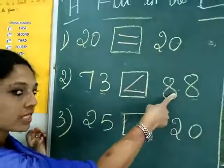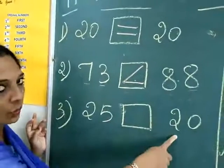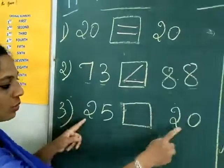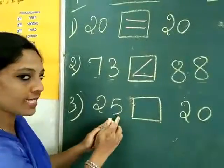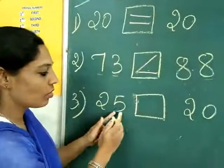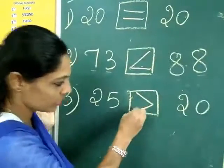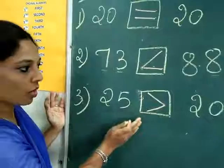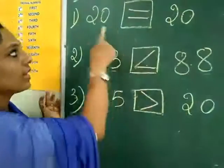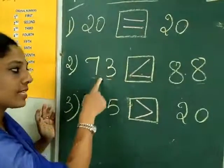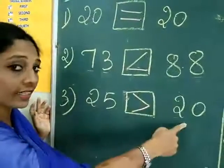The big mouth is open towards the bigger number, eighty-eight, and the sharp point is pointing towards the smaller number, seventy-three. Third example: twenty-five and twenty. Both have the same tens digit, so compare the ones place — five is bigger than zero. So the big mouth opens towards twenty-five: twenty-five is greater than twenty. Summary: twenty equals twenty, seventy-three is less than eighty-eight, twenty-five is greater than twenty.